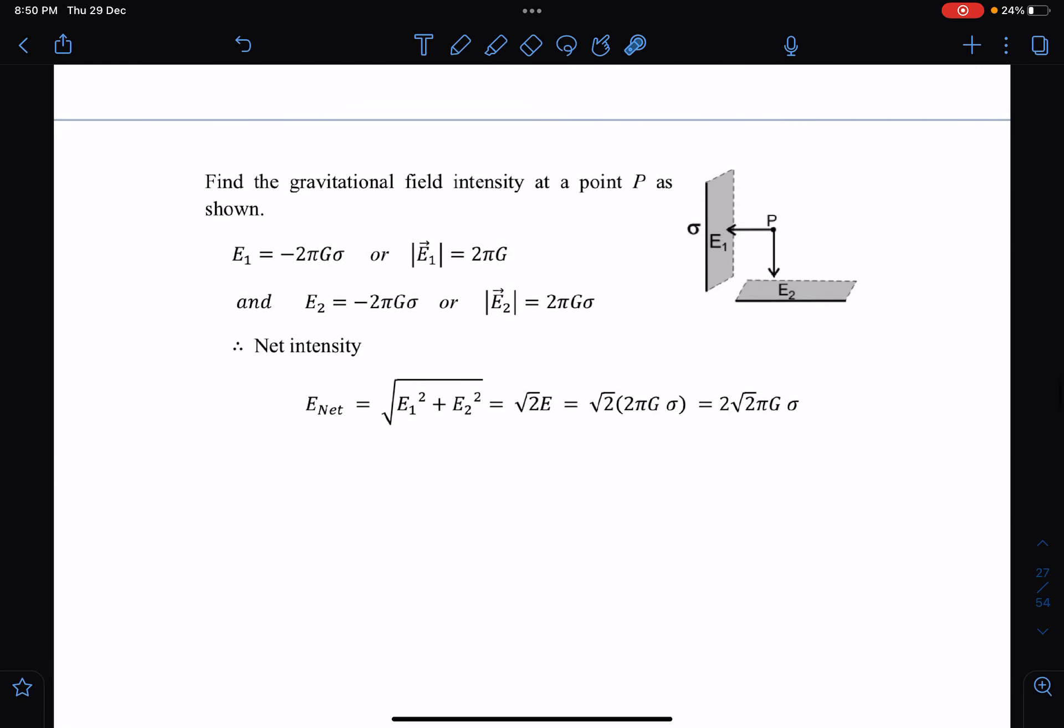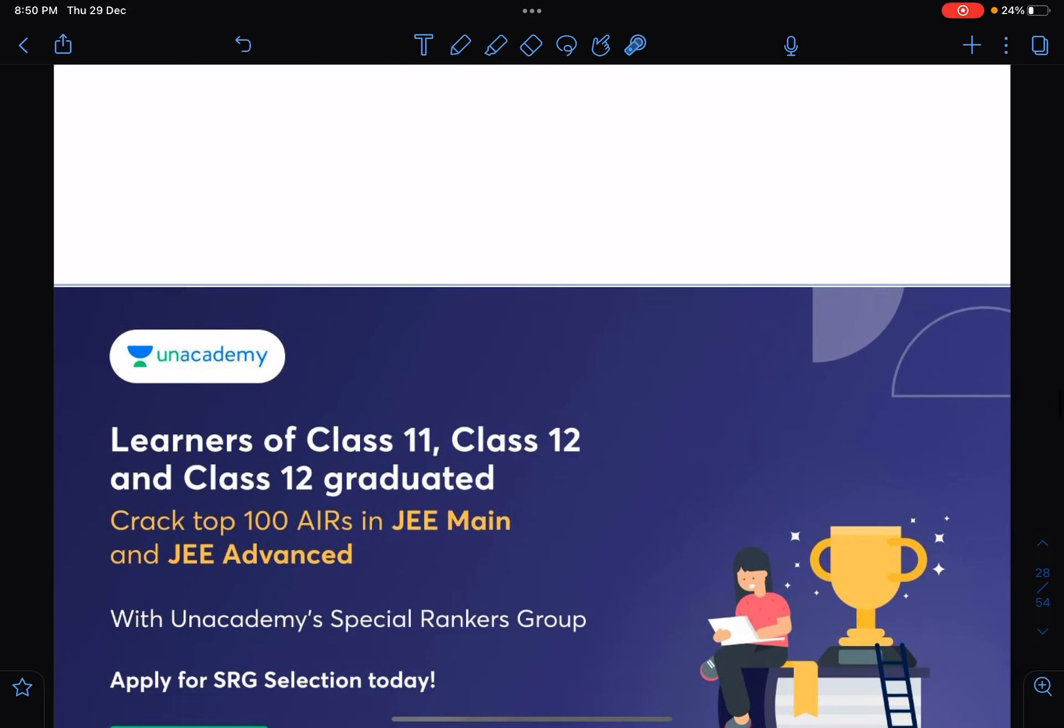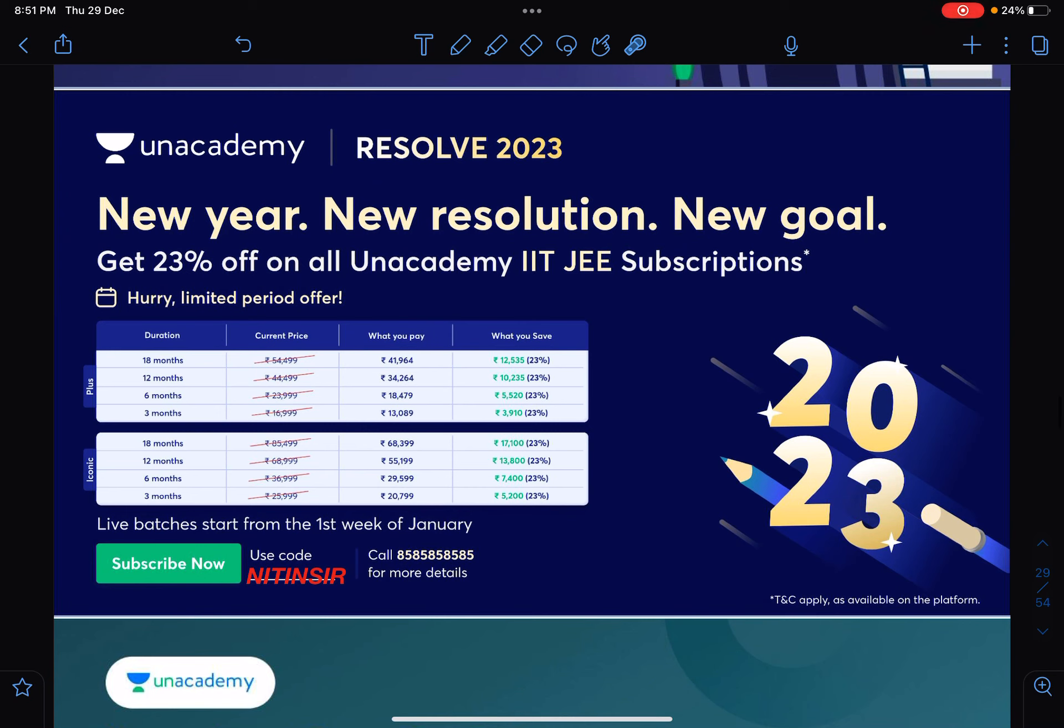There are total 66 to 68 concepts. If you want to connect with me on Unacademy and attend these top rankers classes, which is SRG batches, tests are happening every week. You can participate in those tests and go for rank enhancing input from Unacademy. This is a New Year offer, 23% discount. You can use my code Nithansar to connect with me.